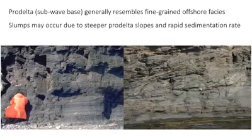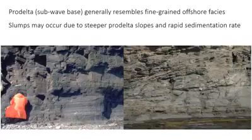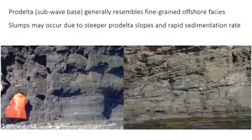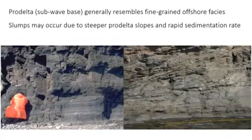The main difference is that in a prodelta, you might find slumps. The high sedimentation rates near the river mouth promote slope instability because the sediment accumulates really rapidly — it doesn't have time to compact and it's very water-rich. Also, the prodelta is just steeper, and so on a steeper slope, you're potentially able to get slumps. That just wouldn't occur in a regular coastal or continental shelf offshore environment.